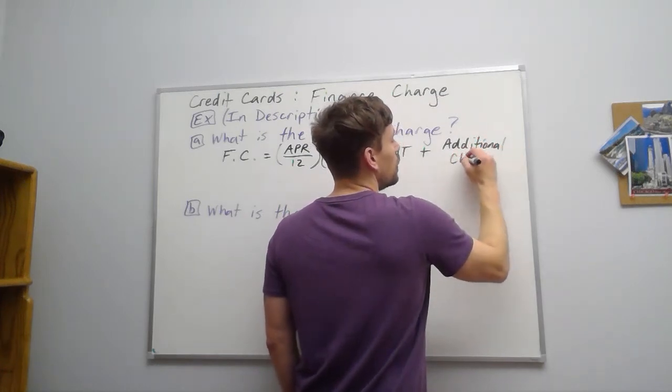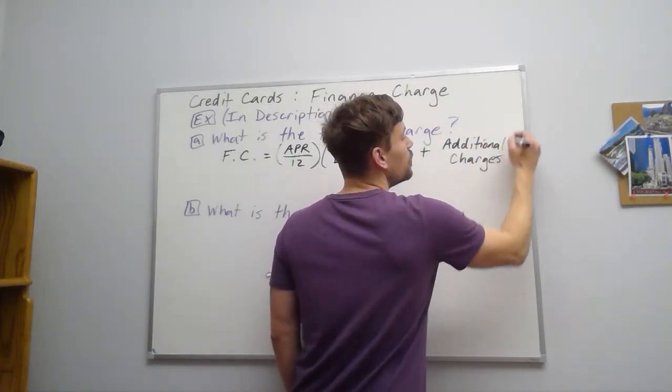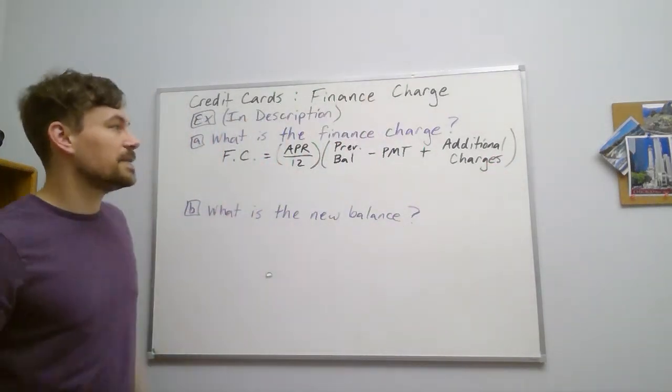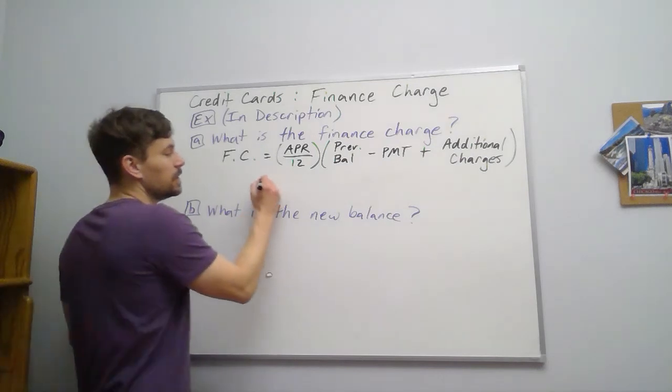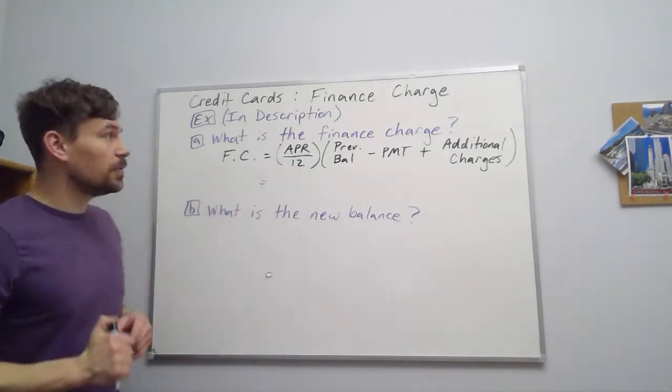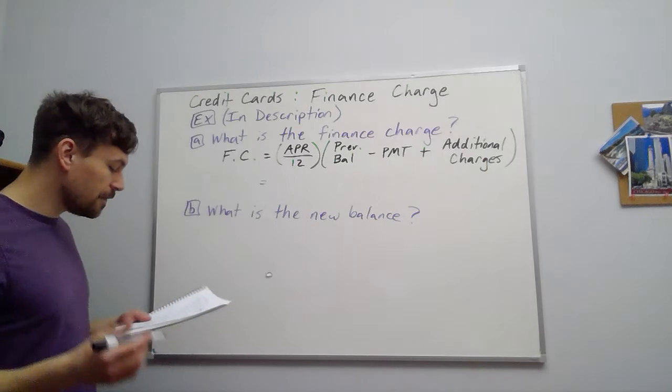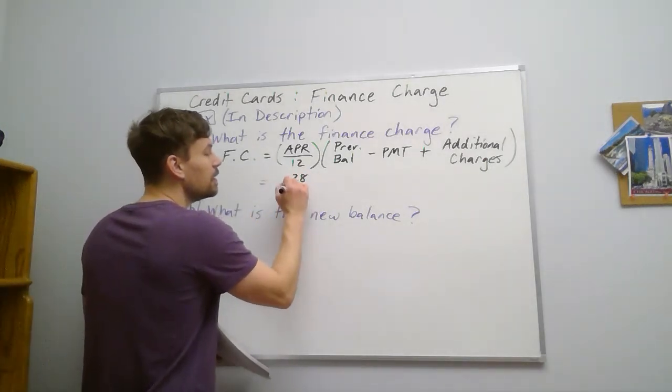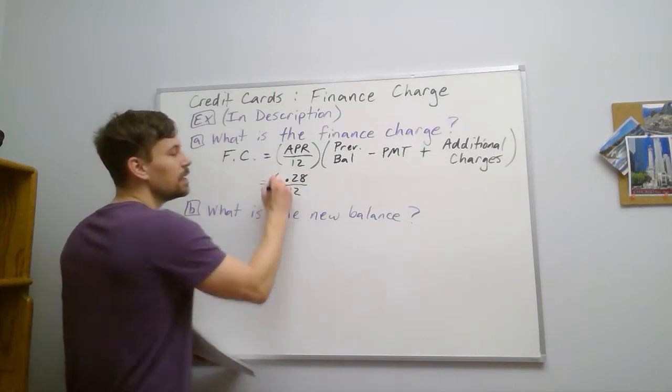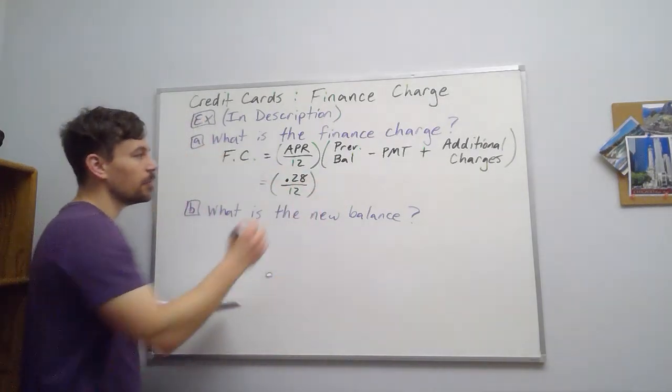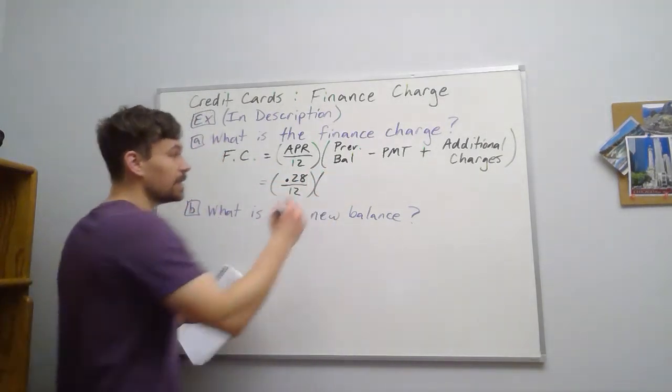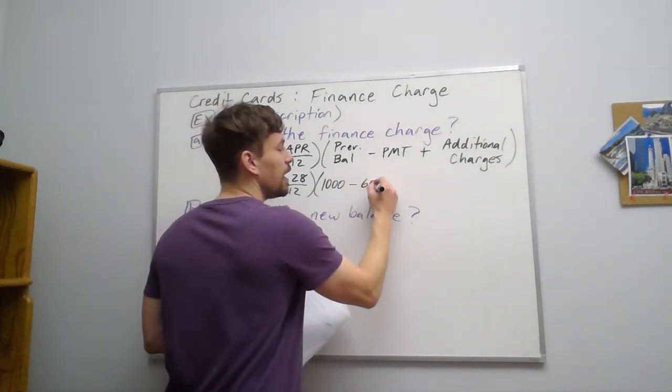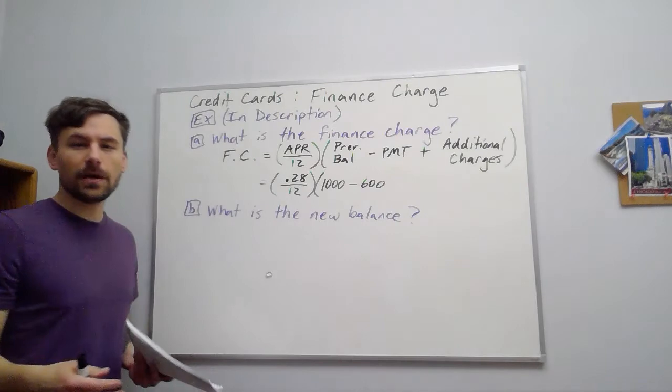So in this particular scenario, we have a 28% APR, so we're going to say 0.28 divided by 12. Our previous balance was $1,000. We made a $600 payment, which is why we're going to have to pay a finance charge. We did not cover all of our balance,